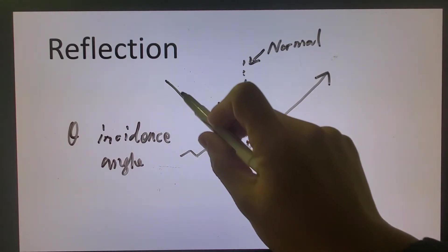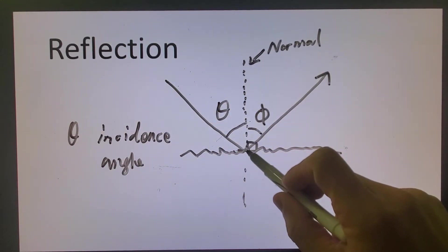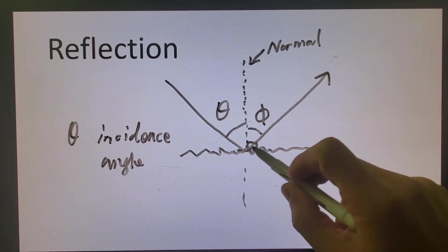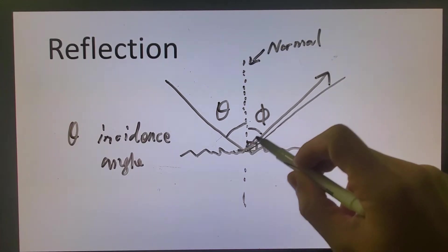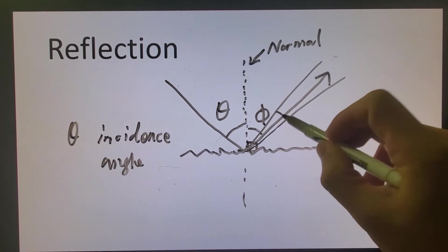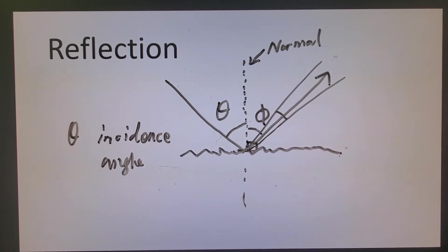That means when you have a tiny laser beam coming here, reflect it out instead of a tiny beam, it's going to smear. It's going to go like this. So this is called off specular reflection.